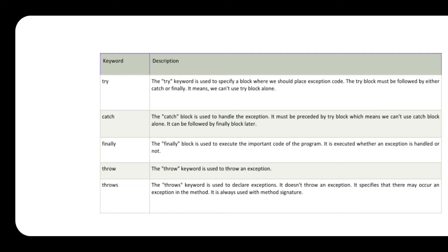The 'try' keyword is where an exception can be caught or recognized. If you find there is an exception within your program, you write that code inside the try block. The try block checks that code and transfers control to the next element. The try block must be followed by either a catch or finally block — it cannot be used alone.